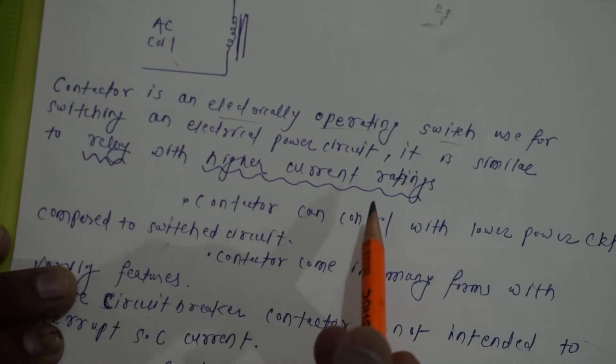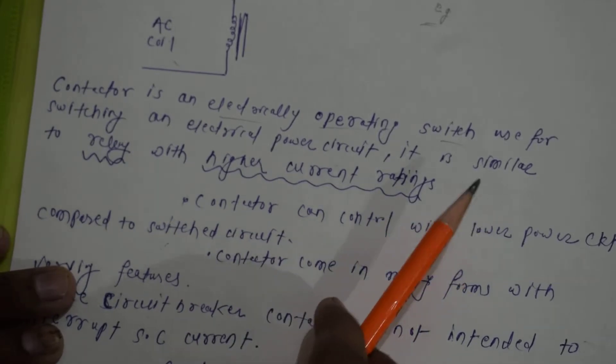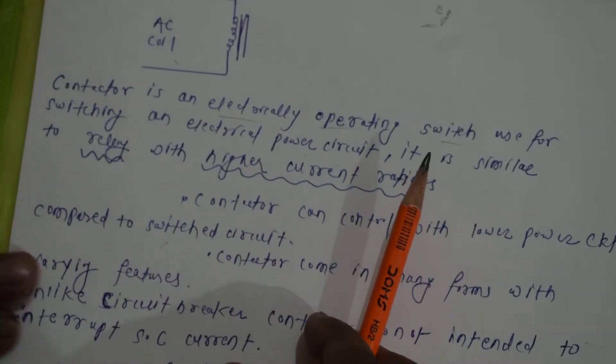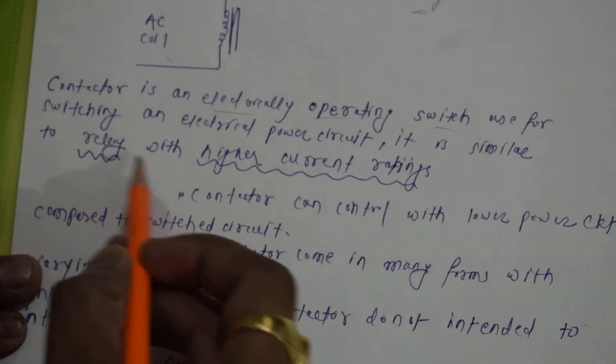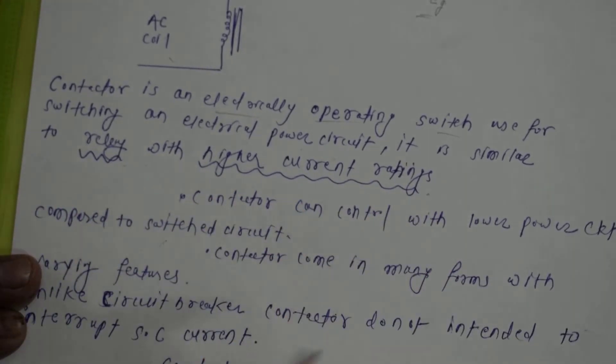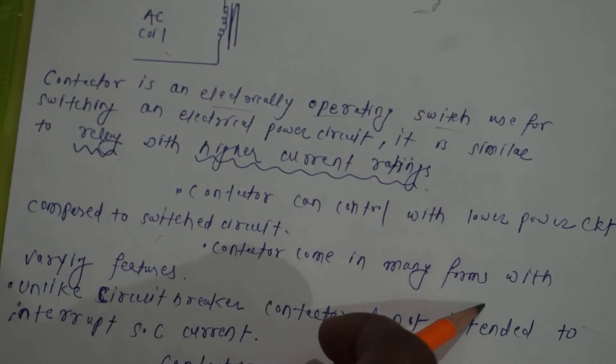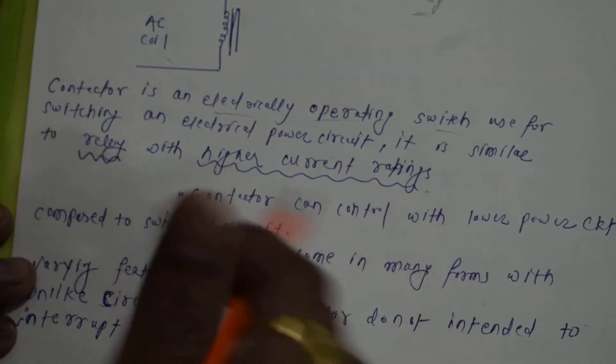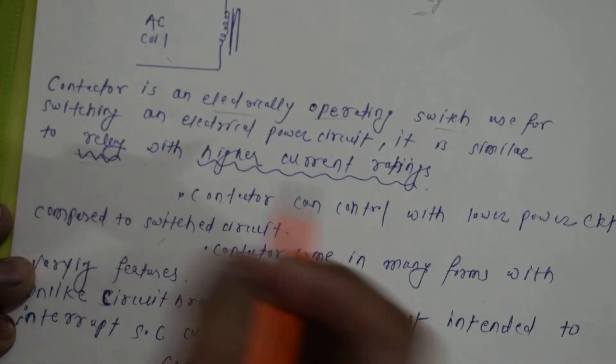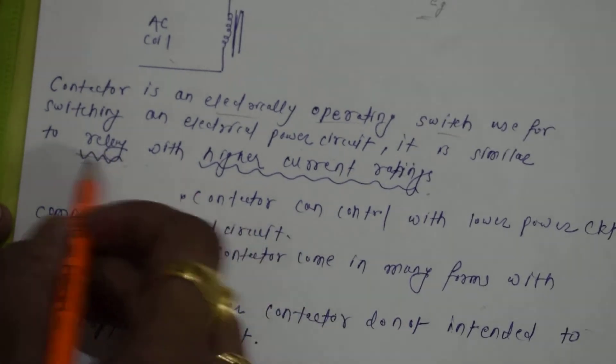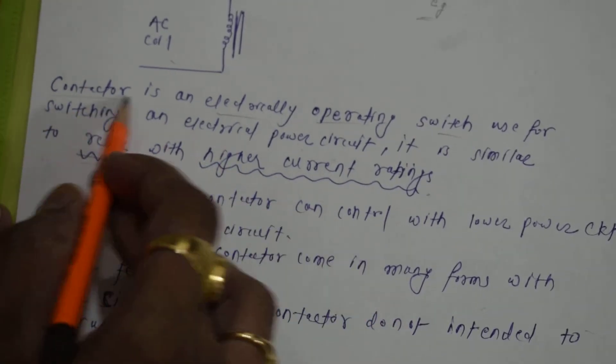It is similar to relay with higher current rating. If you have a doubt, relay does the same work on or off. The relay is used in circuit breakers, but the contactor has a very large current rating.